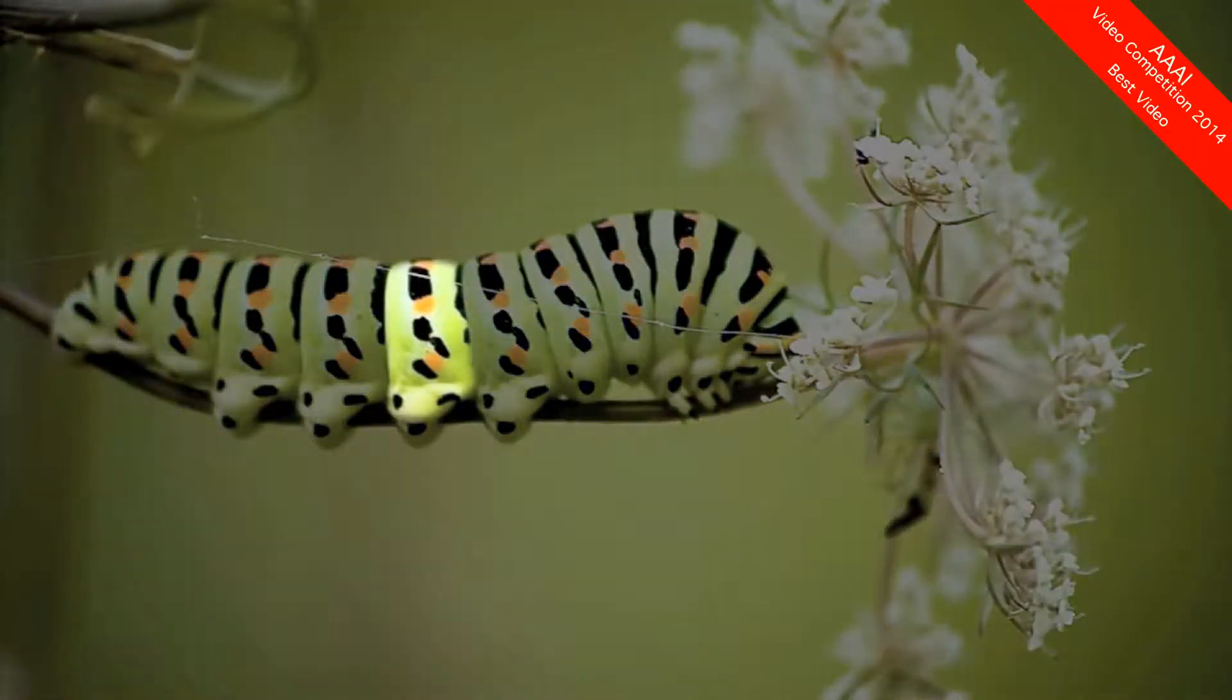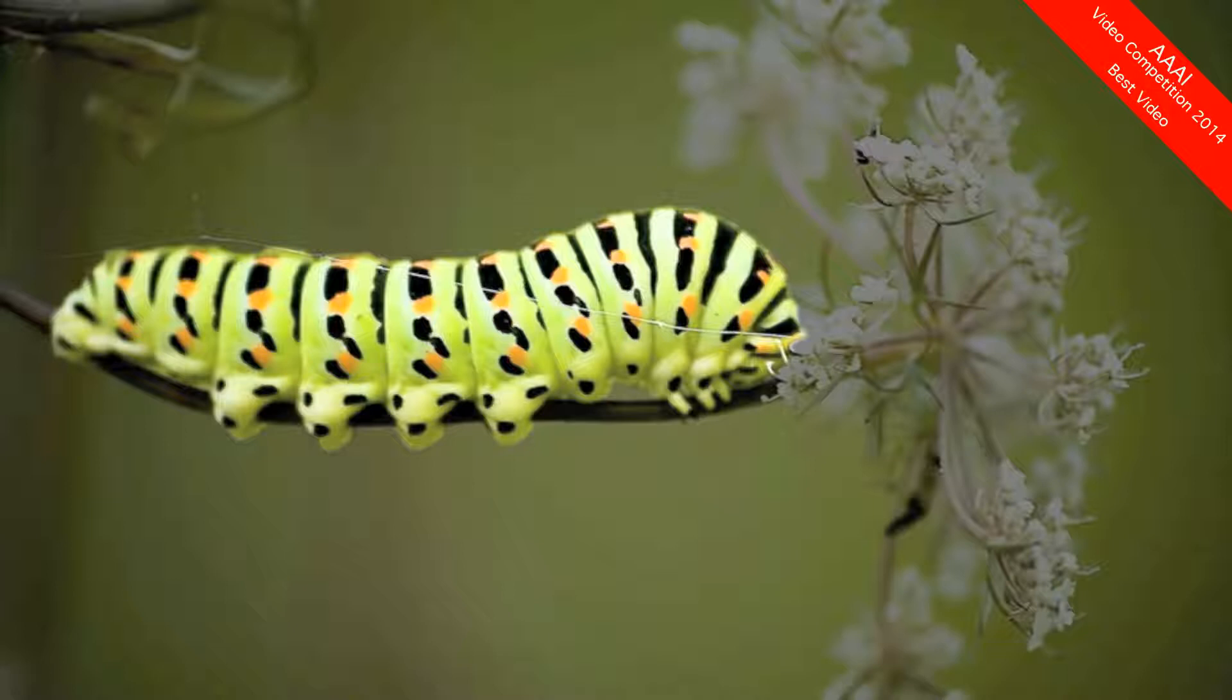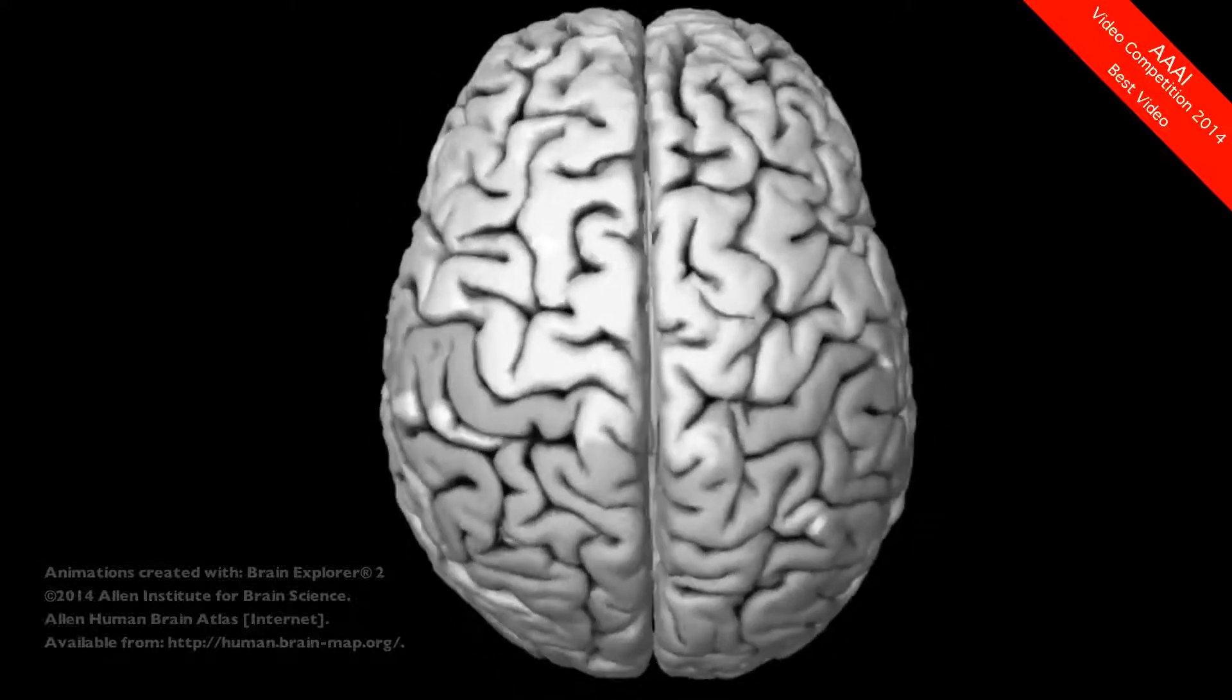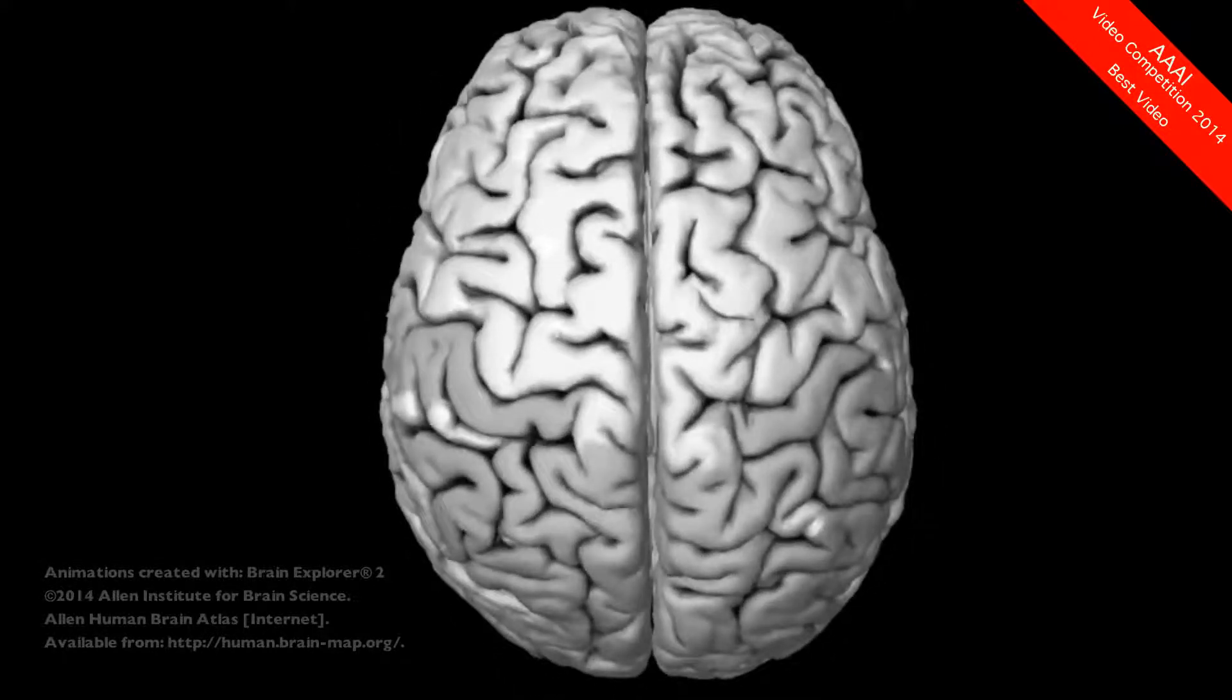Nature also creates modules and makes repeated use of them, likewise creating systems that are both modular and regular. And not only the bodies of natural animals are regular and modular, natural brains show the principles of modularity and regularity as well.